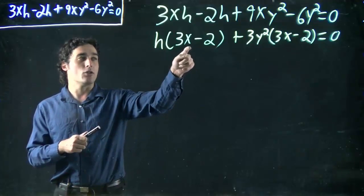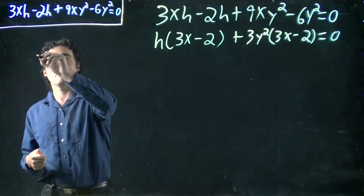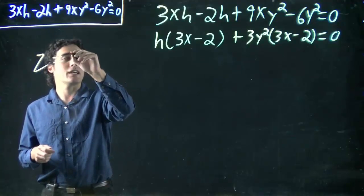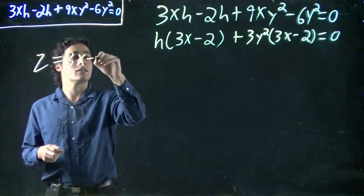But in this case, we're going to be strategic. I want to take this whole bracket and say, arbitrarily I'm going to decide it's z. Could use any variable I want. But I'm saying z is equal to 3x minus 2.